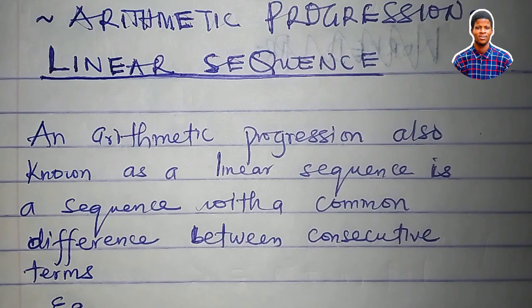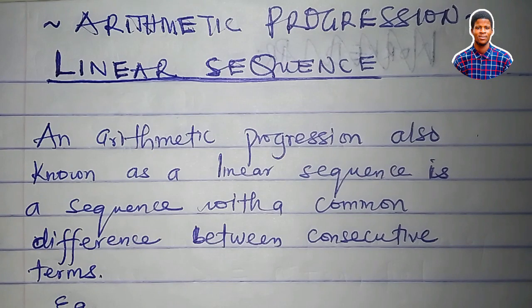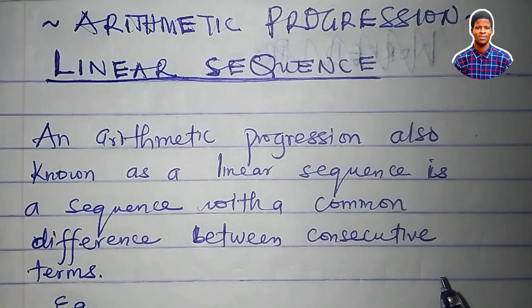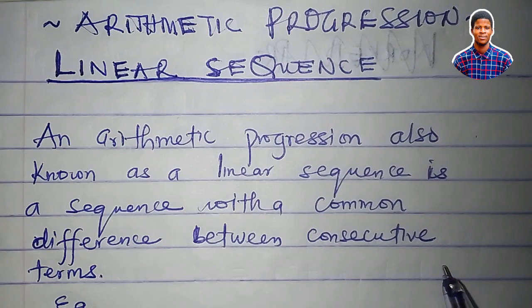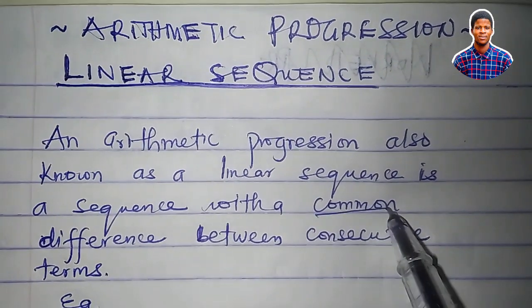An arithmetic progression, also called a linear sequence, is a sequence with a common difference between consecutive terms. When we defined a sequence in the first video, we said that a sequence is an orderly arrangement of terms with a common relationship between consecutive terms. For a linear sequence, the common relationship that exists between consecutive terms is the common difference.